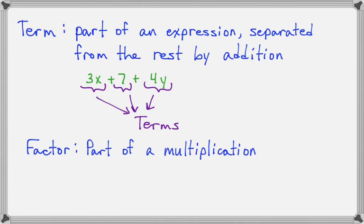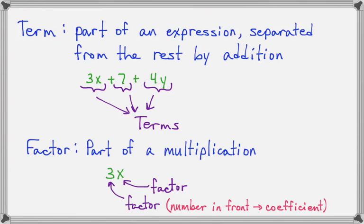Terms can be made of factors. A factor is part of a multiplication. For example, if we take a look at the term 3X, we can see that it's in two pieces. The 3 and the X have to be multiplied together to make this term. Therefore, 3 is a factor, and X is also a factor, and X is a variable, it's unknown. But 3 is the number in front of the variable, so it is a factor that has a special name. It's called a coefficient. The number in front of a variable is called a coefficient. So we multiply a coefficient times a variable, we get one term usually.